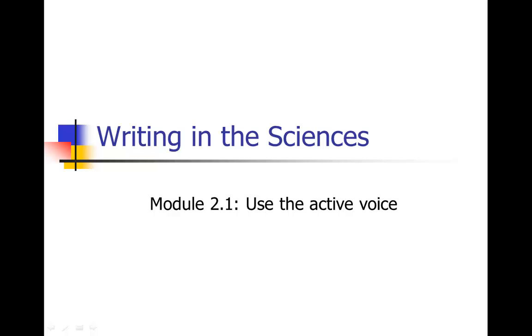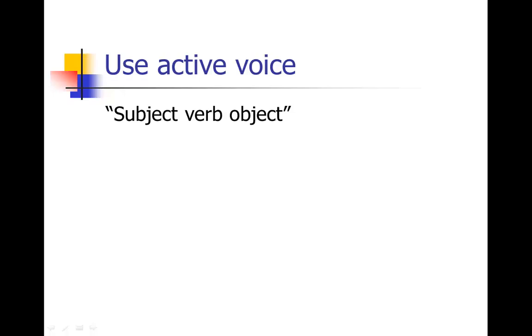So what is the active voice? The active voice follows the format: subject, verb, object. This is the way that we normally talk. We say, she drives the car, she throws the ball. It's a very normal way of talking and writing. And if you change over to the passive voice, it starts to sound very awkward. So I really want you to start thinking about using the active voice.